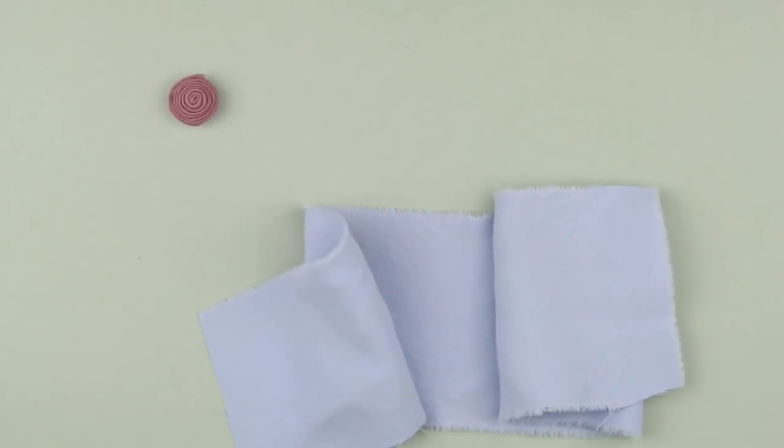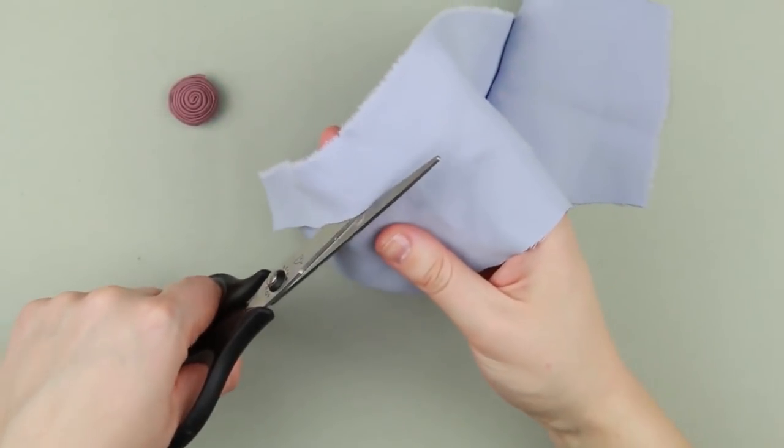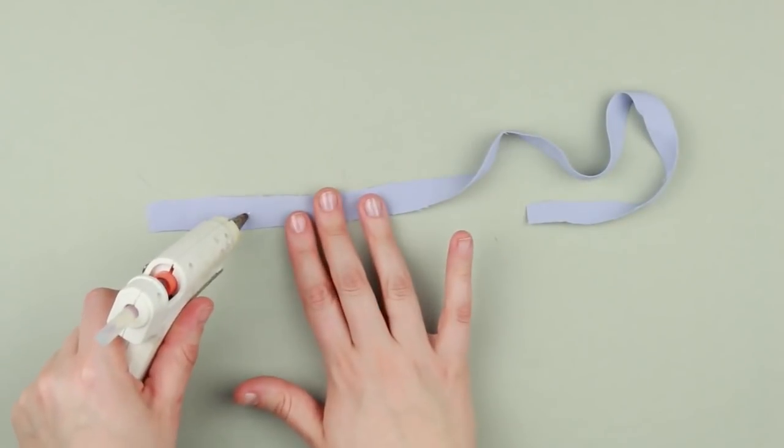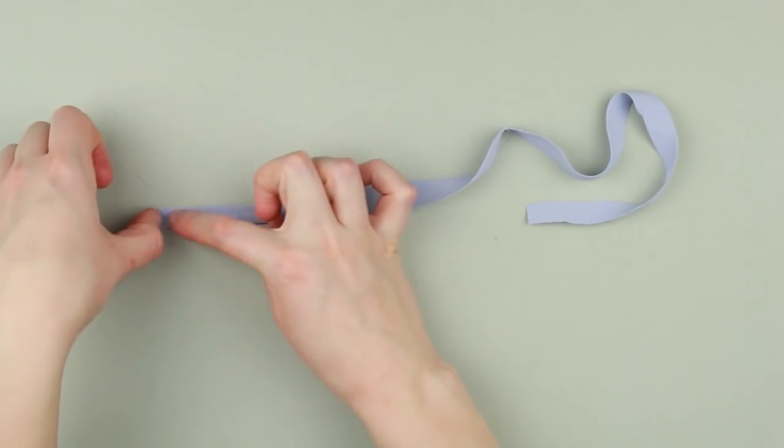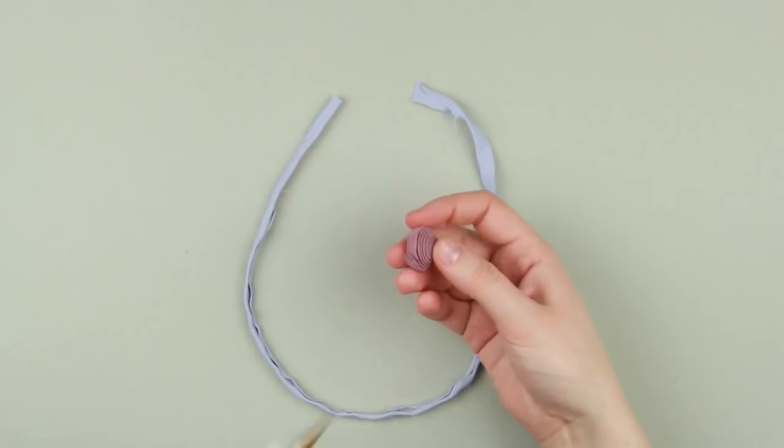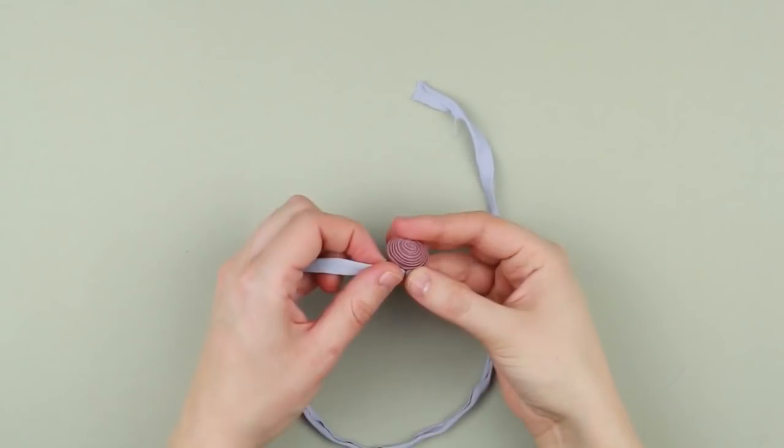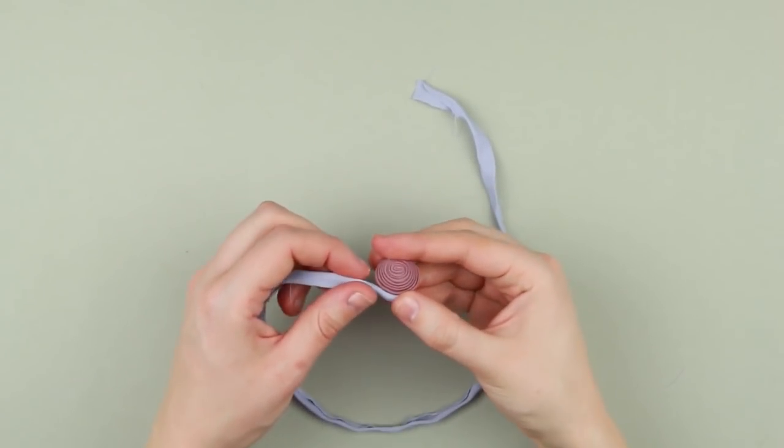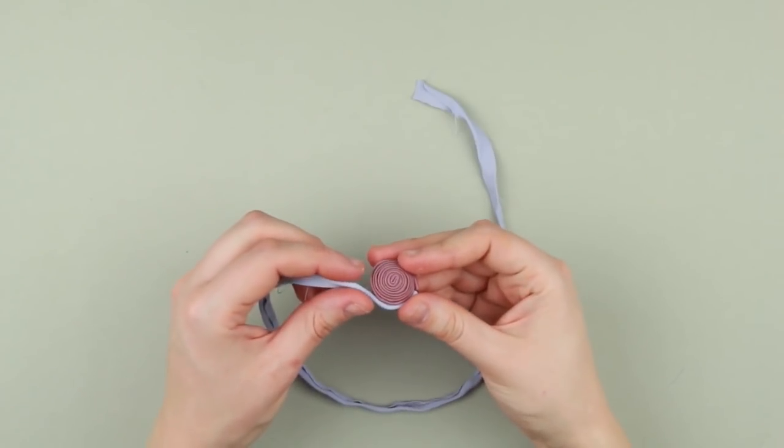Take a blue cloth piece and make another folded strip. Attach the blue strip end to the fabric roll. Roll it around the ash pink detail fastening with glue.